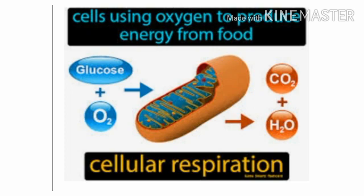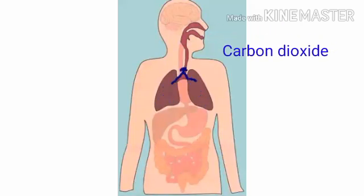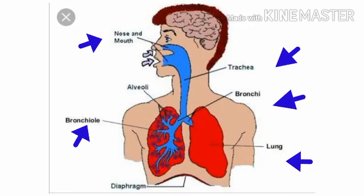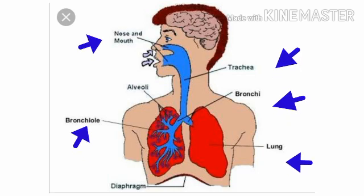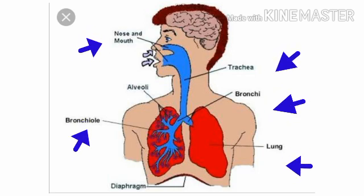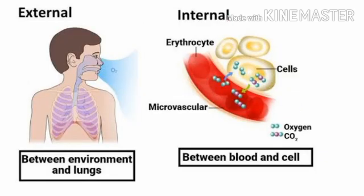The human respiratory system helps us to take in oxygen and give out CO₂. Our respiratory system consists of the nose, trachea (the windpipe), bronchi, and lungs. Together, these organs help us to breathe in and breathe out. The details of the human respiratory system will be discussed in the next videos.